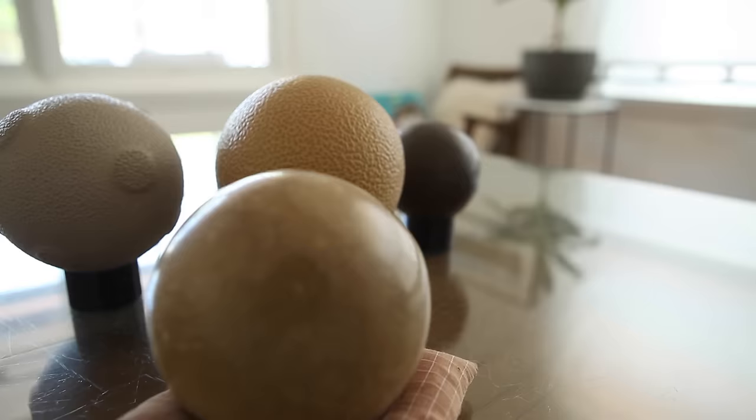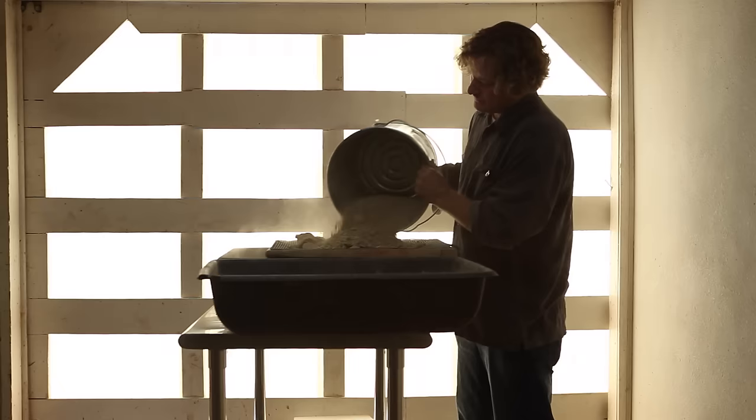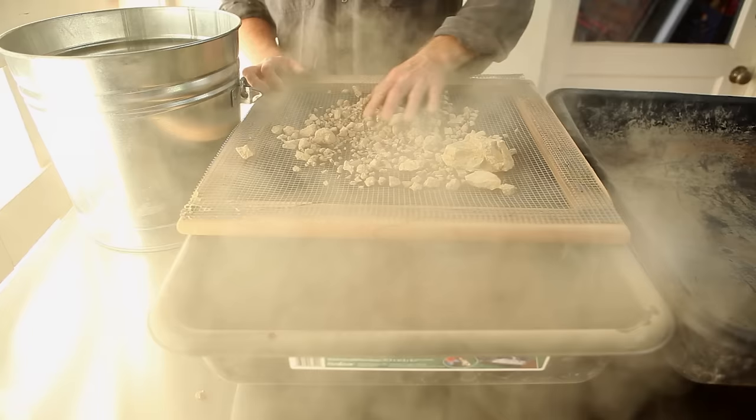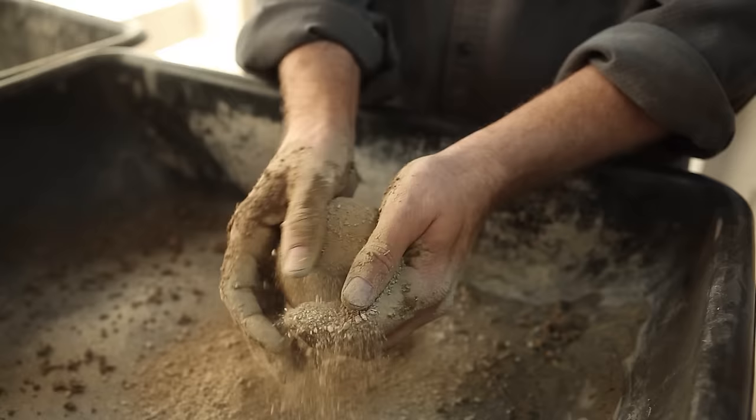Hikaru Dordango is Japanese for shiny dumpling, I think is the exact translation. Hikaru Dordango is a mud ball that is carefully formed and you just start forming the sphere and adding the dry material to it.